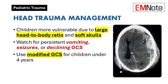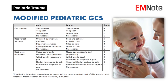Head Trauma Management: Children are particularly vulnerable to head injuries because of their large head-to-body ratio and softer skulls. While bulging fontanelles may occur without coma, persistent or worsening vomiting, any seizure activity, or a declining Glasgow Coma Scale require immediate attention and a head CT scan. Remember that the modified Glasgow Coma Scale should be used for children under 4 years old.